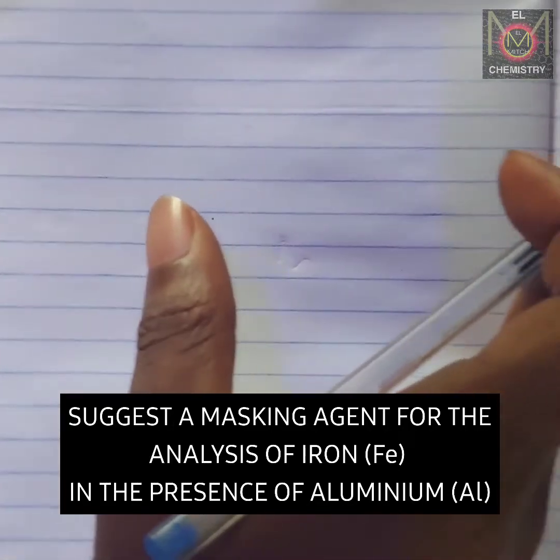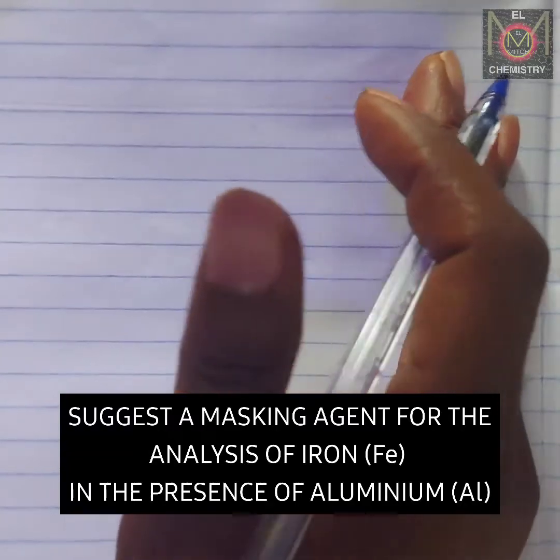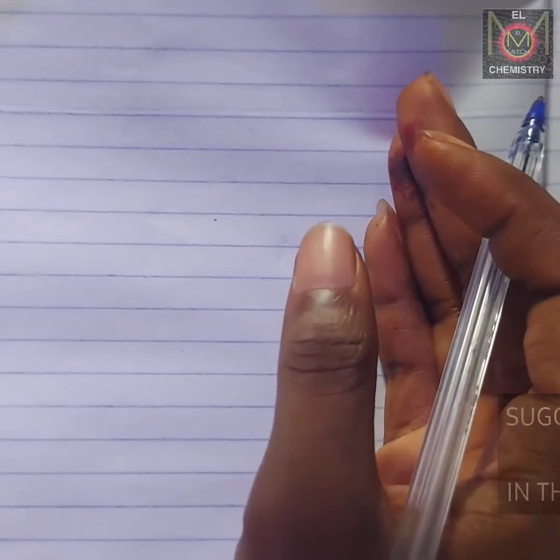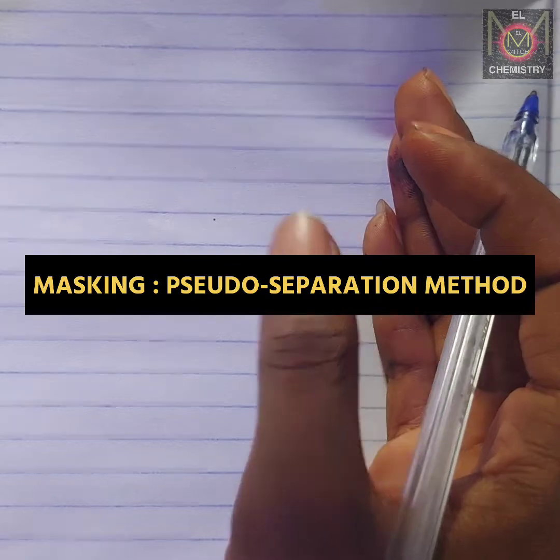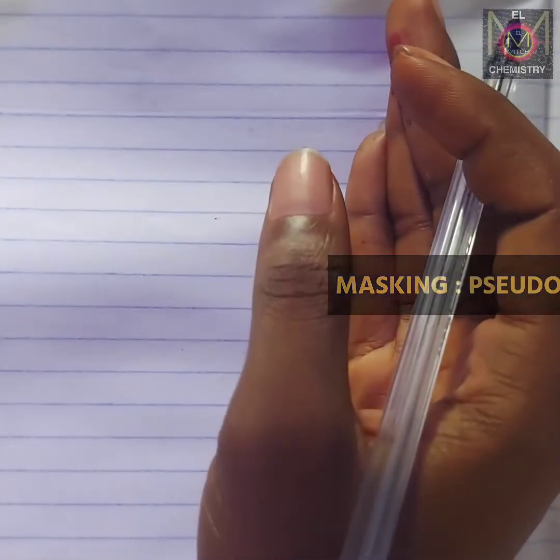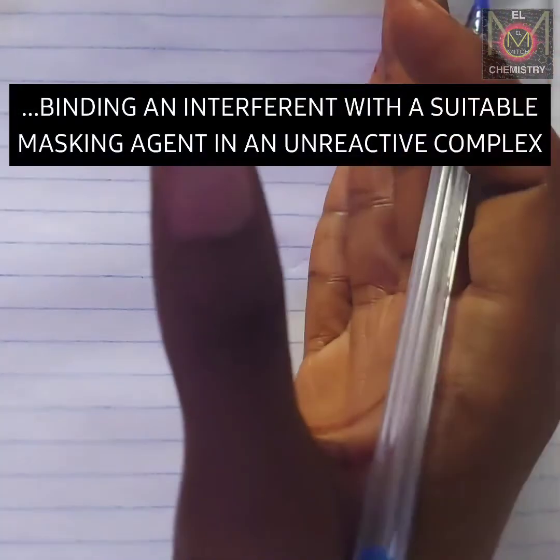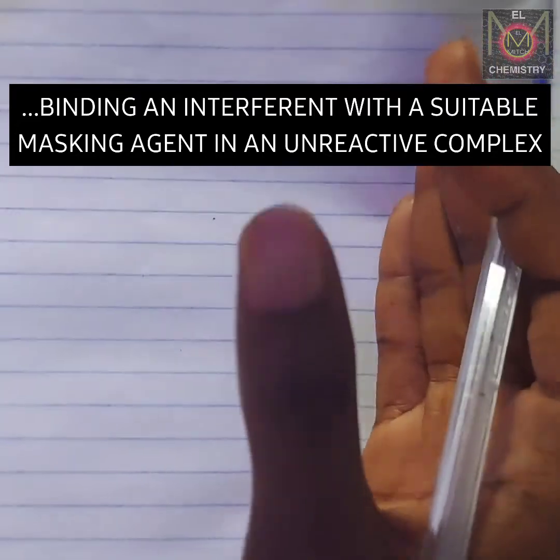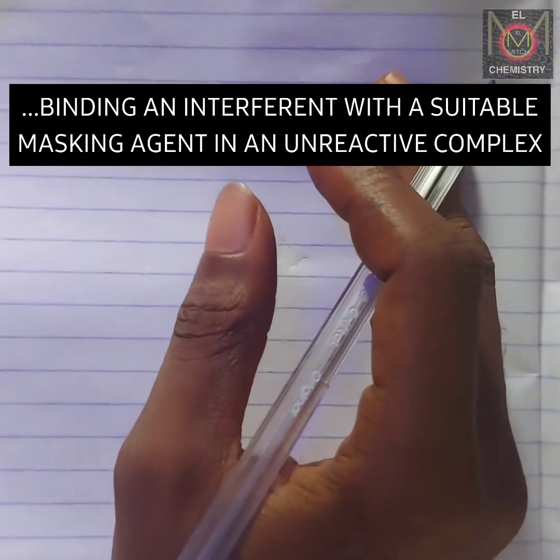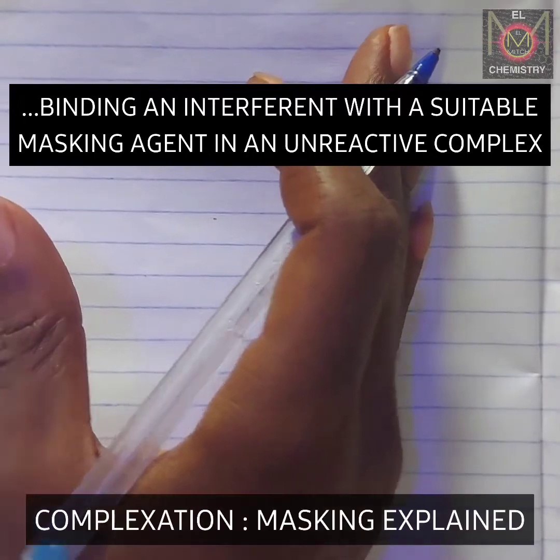So this is masking, and we all know masking is a separation method based on complexation. Masking is an example of a complexation separation technique in chemistry.